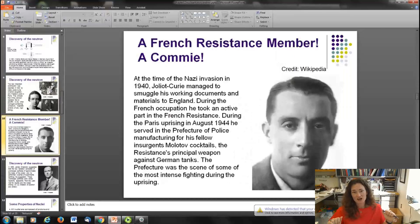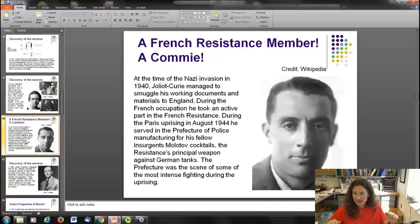Joliot-Curie, he's her husband. In 1940, at the time of the Nazi invasion, he smuggled his working documents and materials to England. During the French occupation, he took an active part in the French Resistance. During the Paris uprising in August 1944, he served in the prefecture of the police and manufactured for his fellow insurgents Molotov cocktails that were the principal weapon that the resistance used against the German tanks. It's also worth noting that when this guy married Irene Curie, they both just ended up hyphenating their name. Because if you work in physics, at the time especially, it probably didn't hurt to have the last name Curie in there somewhere. And this may very well be the most attractive physicist that I have ever seen. It's like a glamour shot.